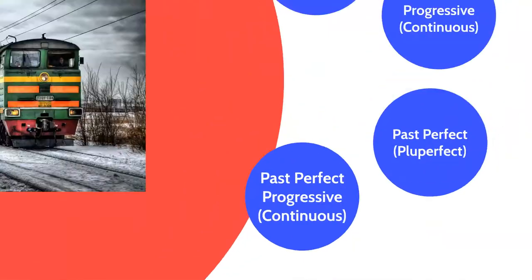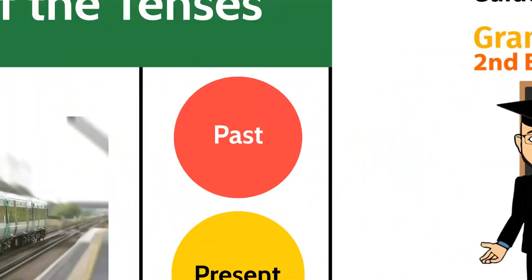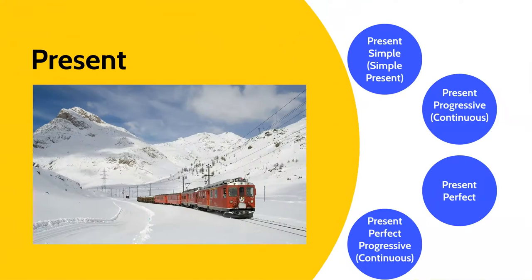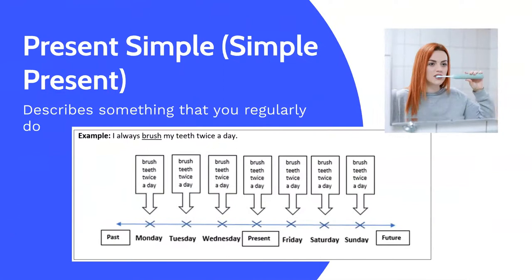Now it's time to continue our whistle-stop tour by visiting the present tenses. The first is the present simple tense, also known as a simple present. This describes something that you regularly do. It can be used with words like always, often, sometimes, seldom, and never. For example, I always brush my teeth twice a day.